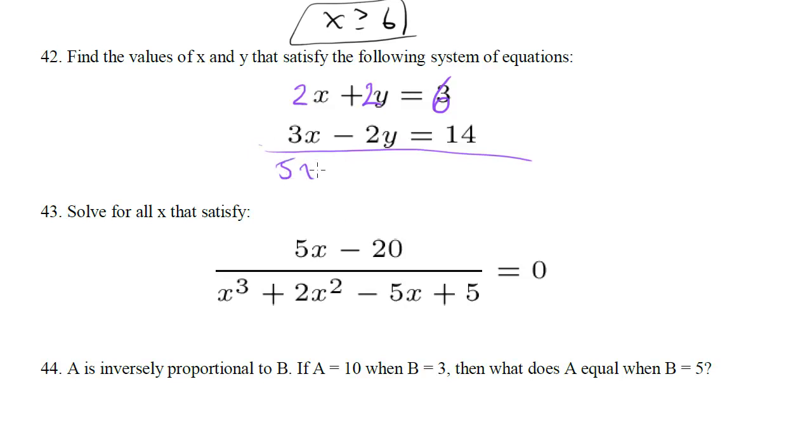So 3x and 2x gives us 5x, these cancel, 6 and 14 is 20, so x is 4. And now we just plug that into any one of these to get the other one.